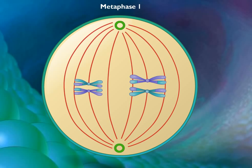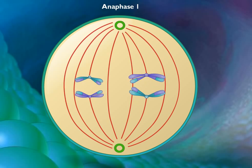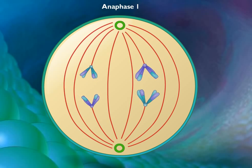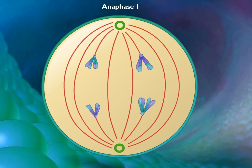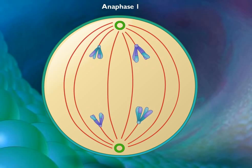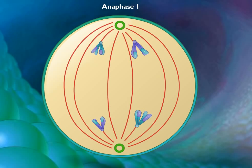In anaphase I, the microtubules of the spindle fiber shorten and pull the chromosomes toward the poles, taking both sister chromatids with them. Each pole ends up with a complete haploid set of chromosomes consisting of one member of the homologous pair.